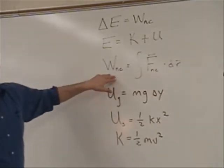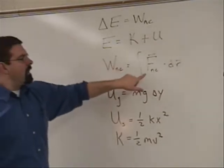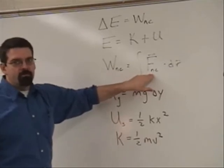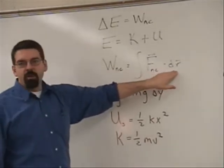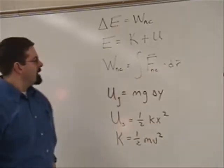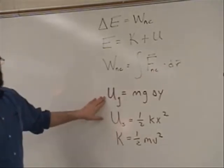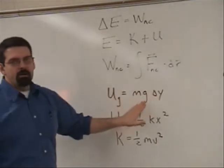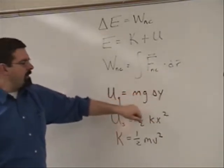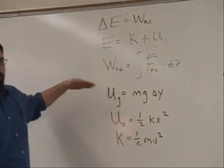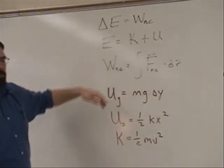The work due to non-conservative forces is equal to the integral of the forces non-conservative, just those forces that are not conservative, dotted into the displacement of the object. The gravitational potential energy is mg y or mg delta y. Don't forget y can be positive or negative depending on where you set your zero point, if you go below it or above it.